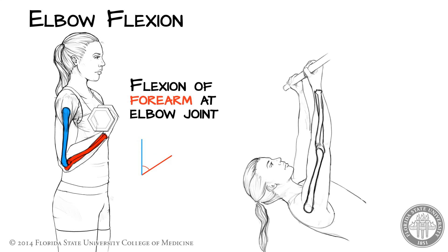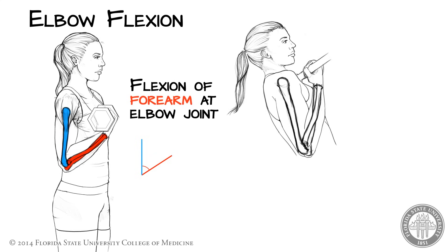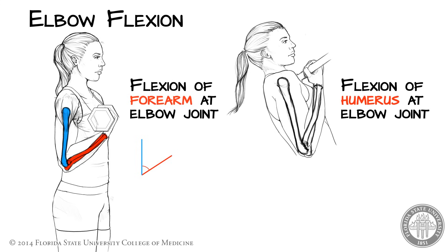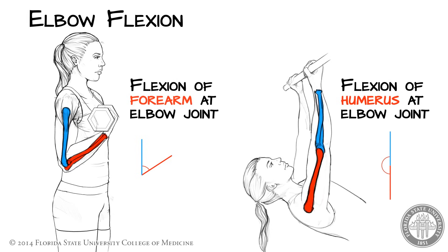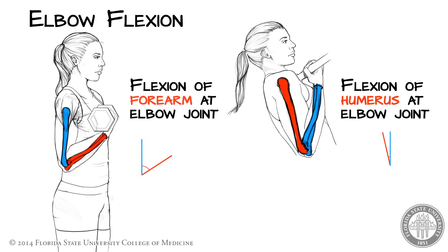Likewise, performing a chin-up is also an example of elbow flexion. However, we can describe this movement as flexion of the humerus at the elbow joint. The humerus is in motion while the bones of the forearm are immobilized by the fixation of the hands to the bar. By applying this principle to the movement of hip abduction, we can better appreciate how the Trendelenburg sign comes about.